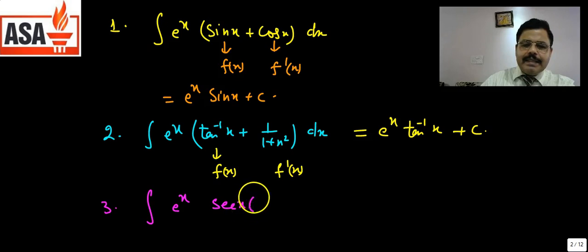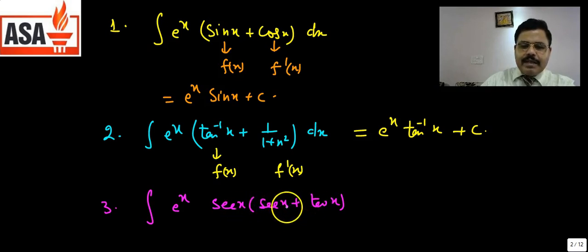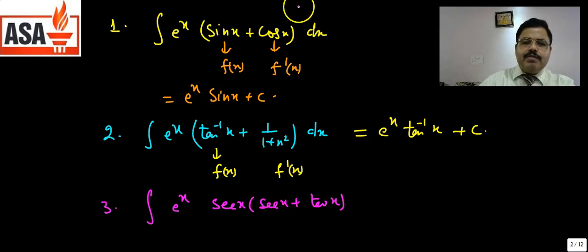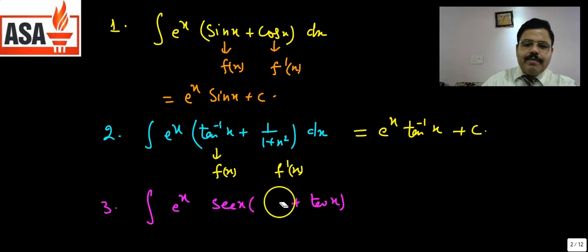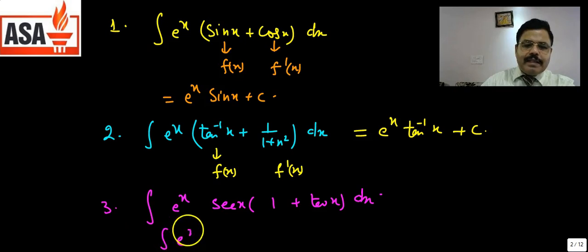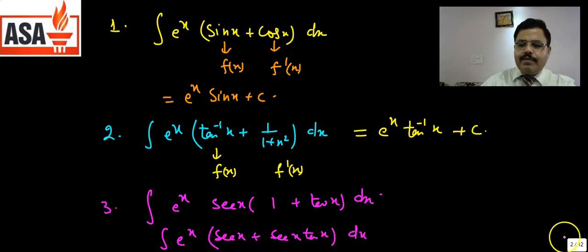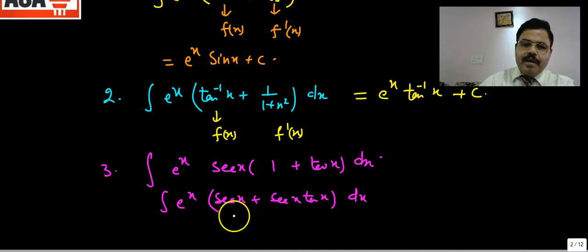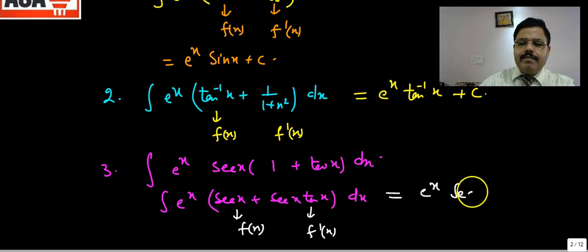Similarly, consider ∫eˣ[sec x + sec x·tan x] dx. Here sec x·tan x is the derivative of sec x. So we can write it as eˣ(sec x + sec x·tan x), where sec x is f(x) and sec x·tan x is f'(x). Therefore the answer is directly eˣ·sec x + C.